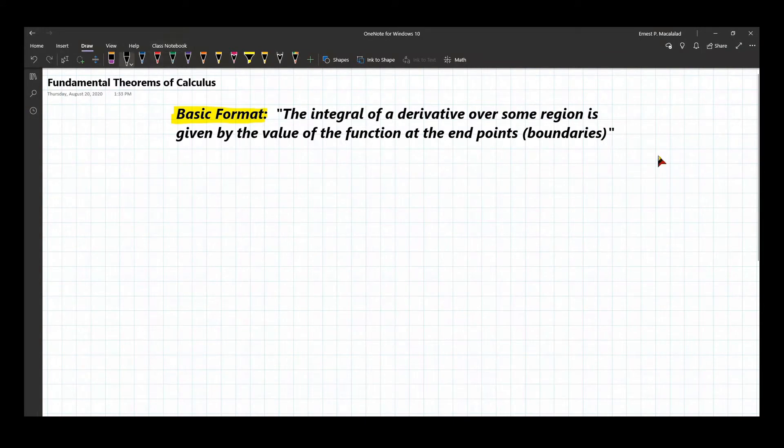So if we have a line, for example, if this is the region, the endpoints that we're talking about here are the points. Now let's say if we have a surface, the boundary of this surface would be the edge of the surface.